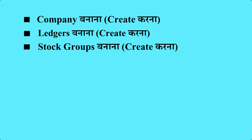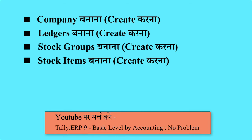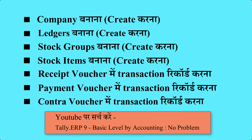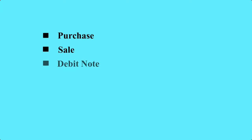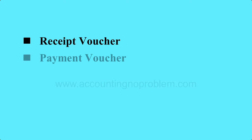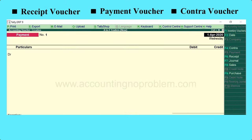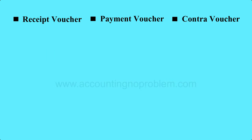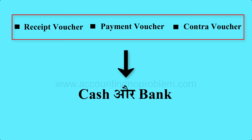इस वीडियो सीरीज में पहले हमने एक company बनाई, ledgers, stock groups, stock items और अन्य जरूरी चीज़ें बनाई थीं। Receipt voucher, payment voucher और contra voucher में हमने DR और CR का उपयोग करते हुए entries की थीं। जैसा कि हमने बताया था, ये तीनों vouchers cash और bank से संबंधित होते हैं।